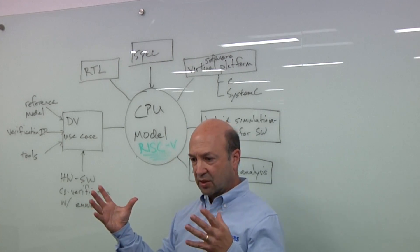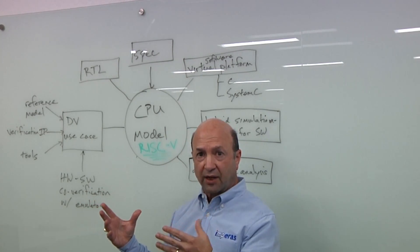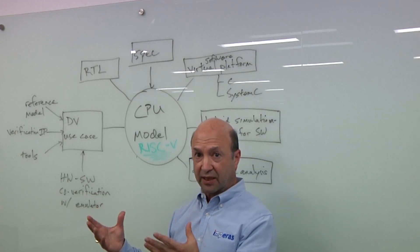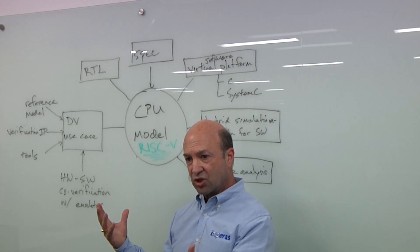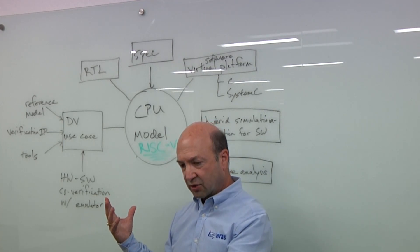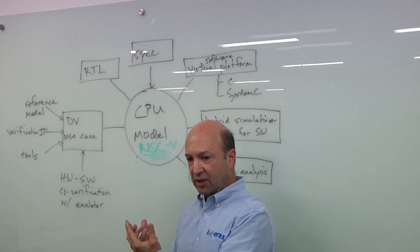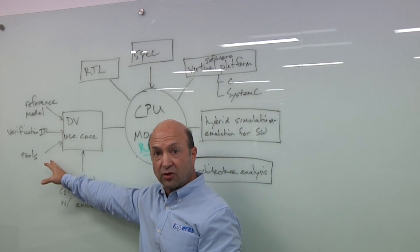Because of that state space problem and because we're needing to verify asynchronous events, things like interrupts, we have to have some synchronization that occurs between the device under test, the RTL, and the reference model. And that's where the verification IP and then the tools come in.